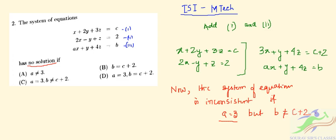You can check with the options. The correct option in this case is option C: a equals 3 and b is not equal to c plus 2. This is the correct option for question number 2. Thank you so much.